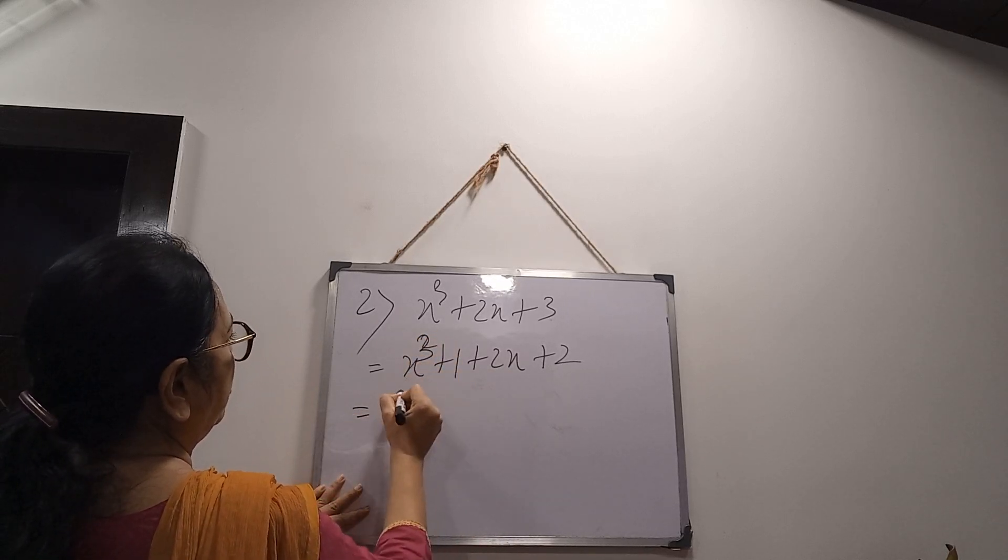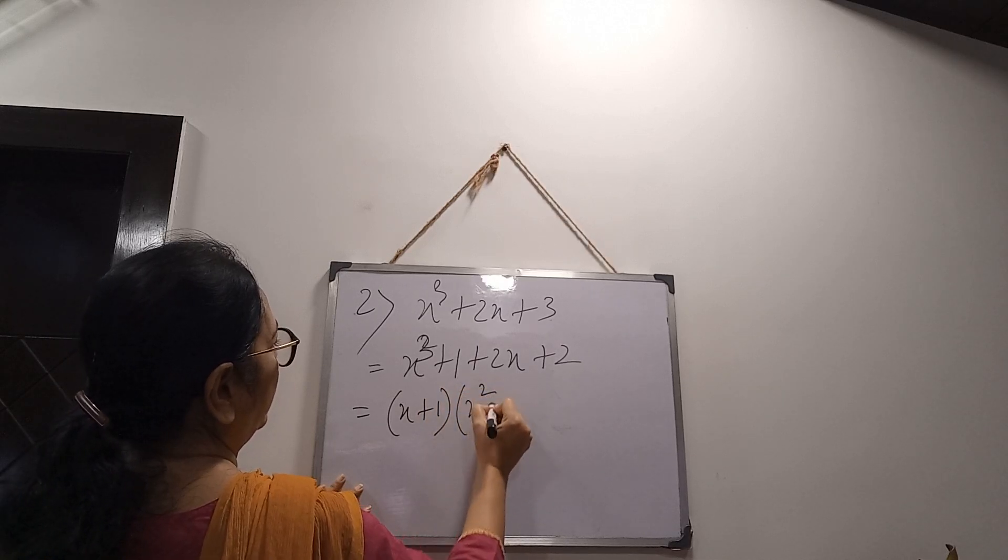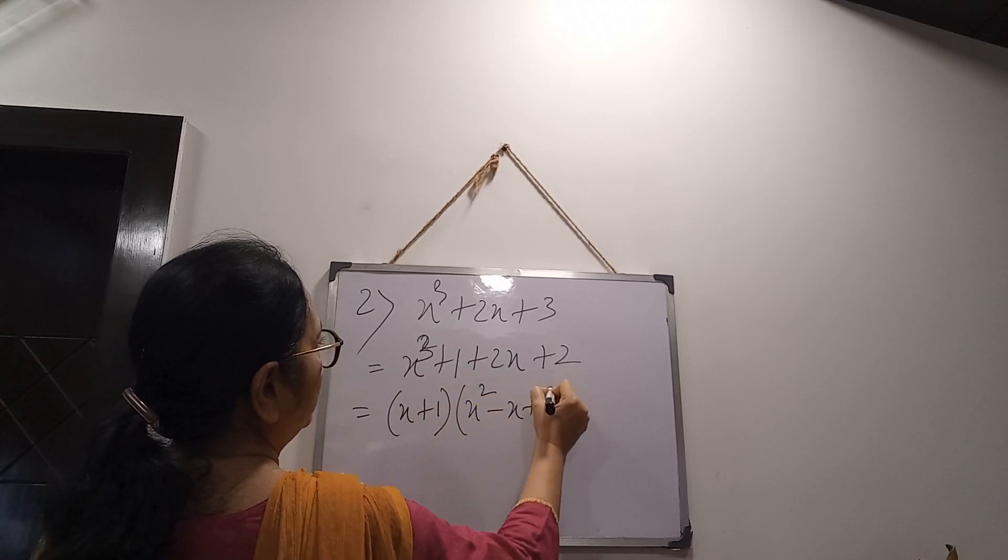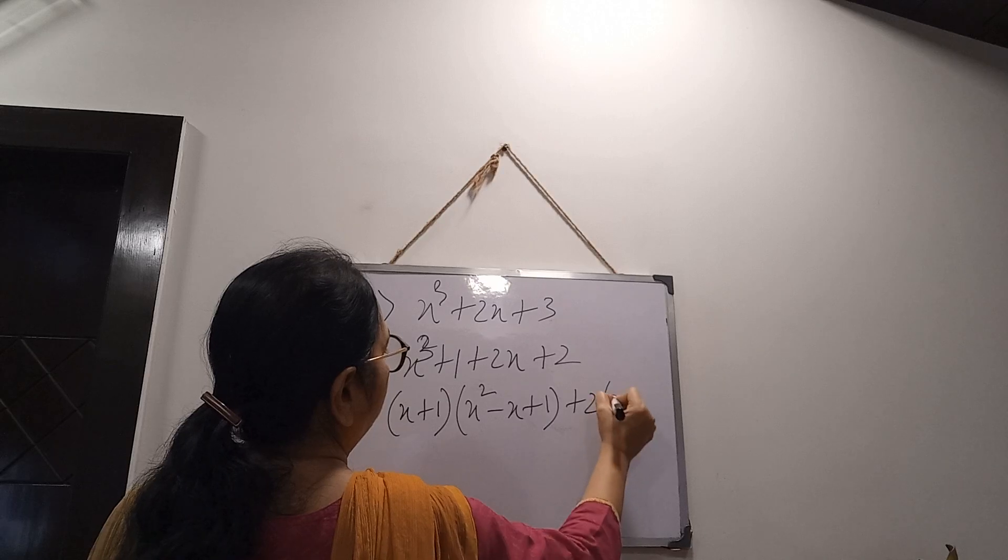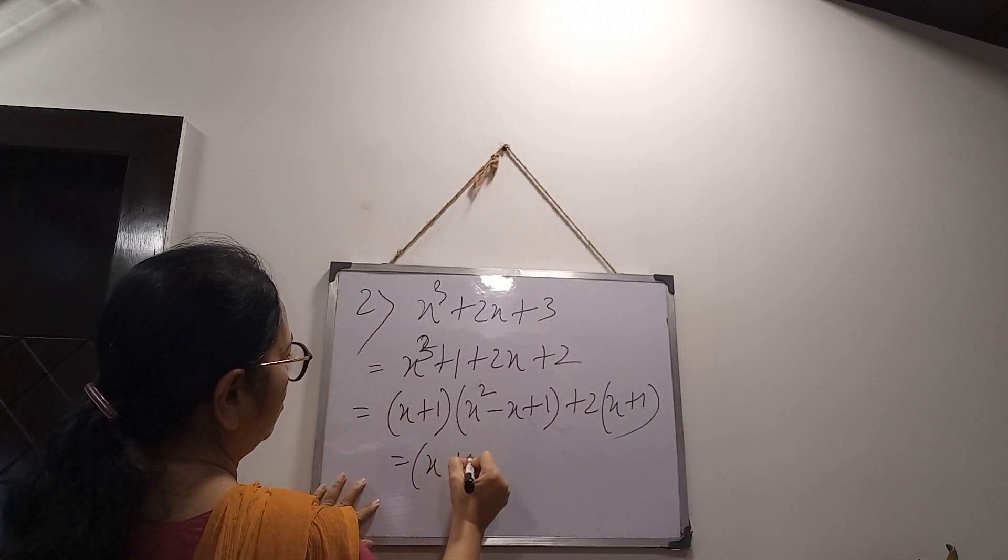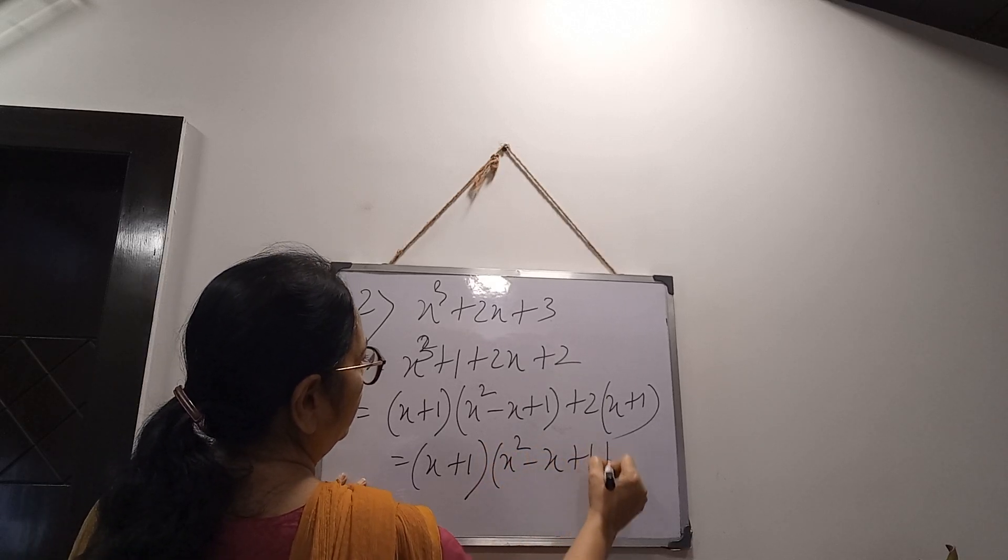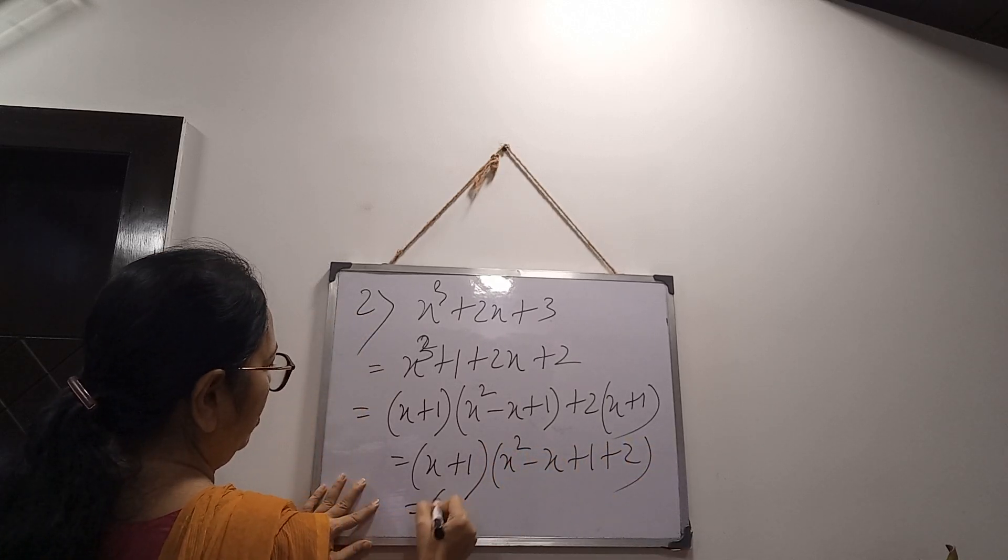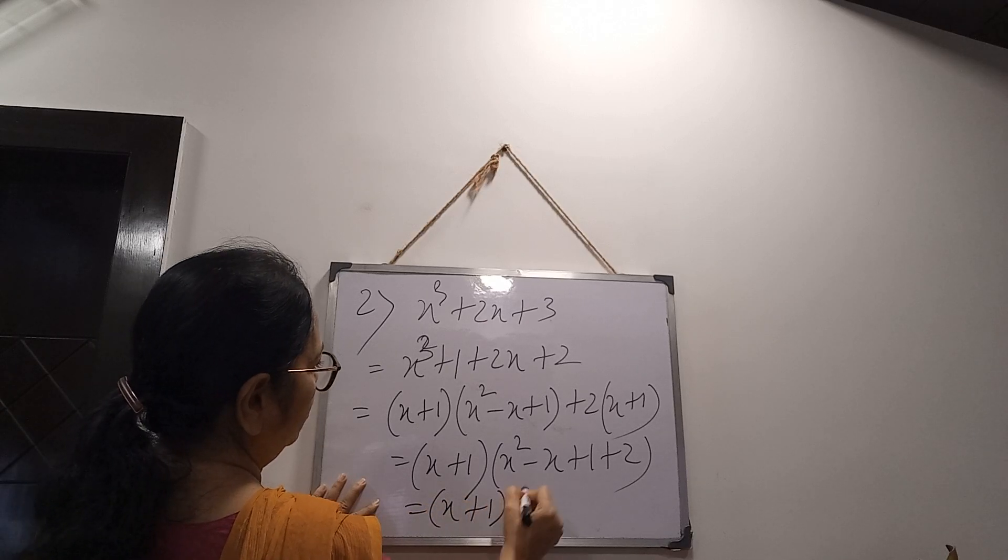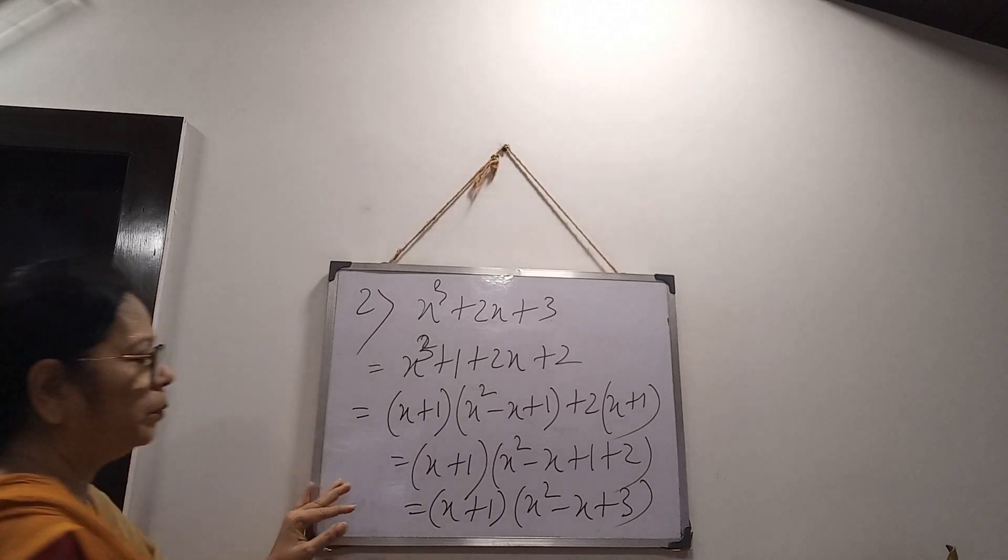Now, a³ + b³ formula: a + b into a² - ab + b². From here, plus 2 common: x + 1. Then x + 1 common: x² - x + 1 + 2. x + 1 common: x² - x + 3.